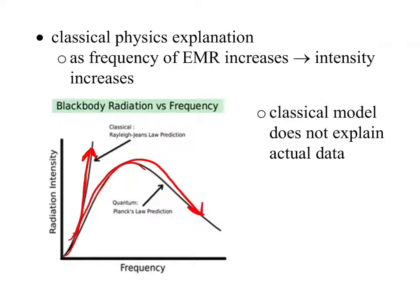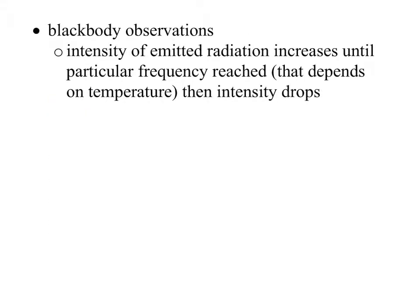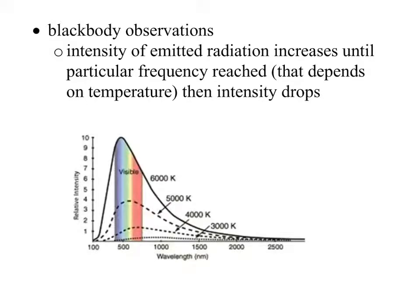This was the actual data. This is what classical physics expected to happen. So here, everything we knew so far about physics, well, it just didn't work at this point. So we needed a new explanation. So with these black body observations, we figure out the intensity of the emitted radiation does increase, but until a particular point, and then it just starts going right down.